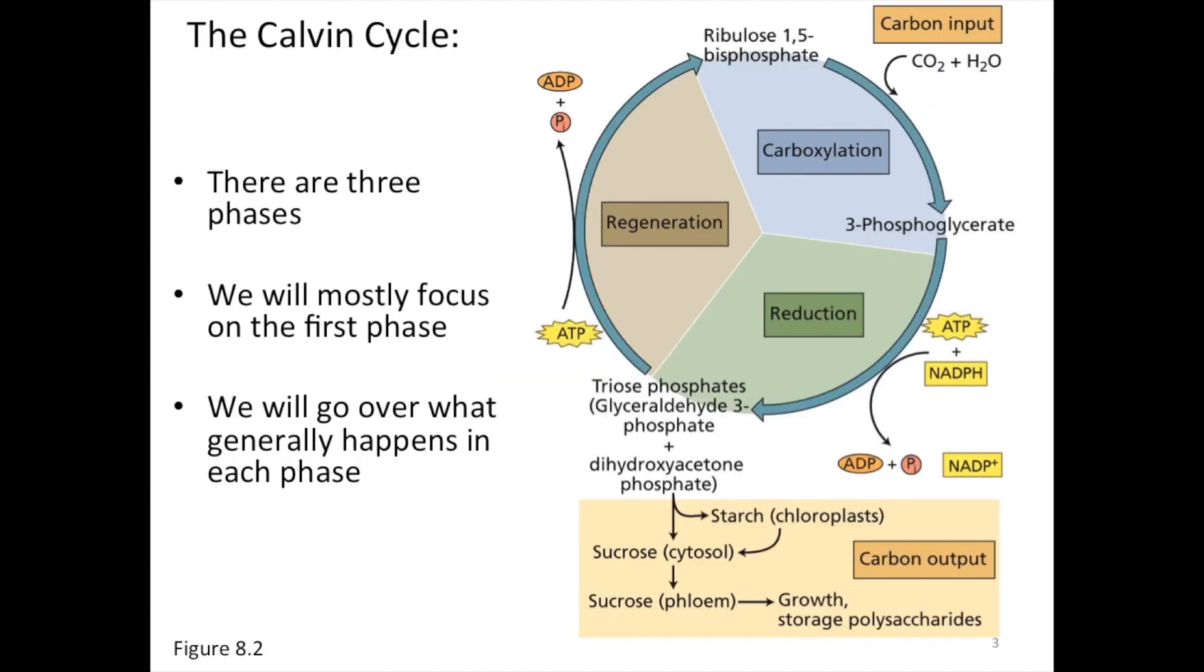Here is the full Calvin cycle shown in a diagram from chapter eight. There are three main phases: carboxylation, reduction, and regeneration. We will mostly focus on the first phase, carboxylation. I want to emphasize in very general terms what is happening at each phase as opposed to focusing on the many intermediate reactions it can take to get from one phase to the next. So let's just think inputs and outputs.